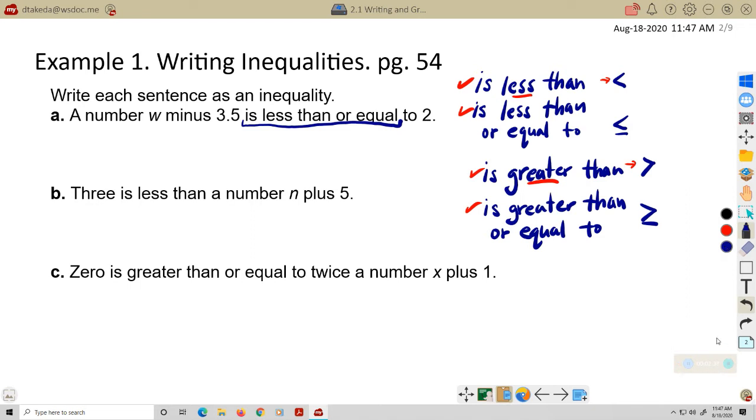Okay, and one thing also, when you use these symbols, it always points to the smaller object. So if you can't remember which words go with which symbol, when you're dealing with numbers, always point to the smaller object. So here we go. Letter A, a number W minus 3.5 is less than or equal to 2. Well, so W minus 3.5 is less than or equal to 2. So pretty straightforward. Like I said, it just translates over directly.